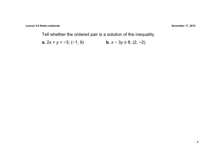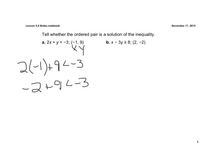Let's do a couple examples of whether or not a point is a solution. Think back to previous sections — all we need to do to figure out if it's a solution is plug in negative 1 for x and plug in 9 for y, and see if it's a true statement. So we rewrite that: plug in negative 1 for x, plug in 9 for y. That's less than or equal to negative 3. We've got to see if this is true. If it's true, it's a solution; if it's false, it's not a solution. Negative 2 plus 9 is 7, so we have to ask ourselves: is 7 less than negative 3? That's not true, so it's not a solution.